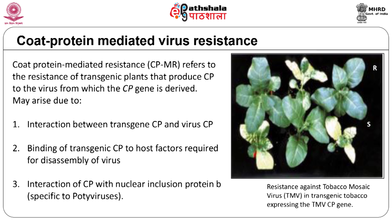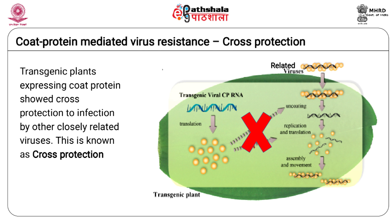A third mechanism is where the coat protein may confer resistance against potyviruses by interacting with nuclear inclusion protein B, a replication protein specific to potyviruses. However, CP-mediated resistance does not appear to work for plant-infecting DNA viruses. Resistance in transgenic plants expressing the coat protein gene was related to the level of expression of the viral coat protein, suggesting resistance results from inhibition of the dissociation of inoculum virus particles into protein and genomic RNA.